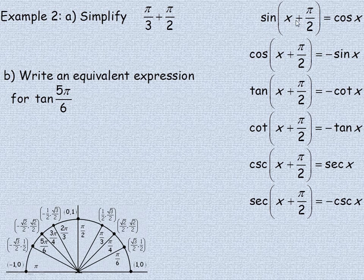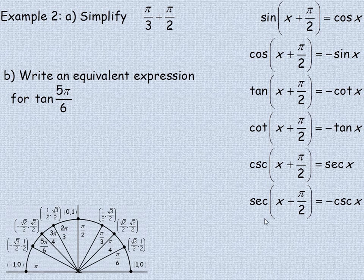For example, the sine of x plus pi over 2 is the same as the cosine of x. But the cosine of x plus pi over 2 is the negative sine of x — the magnitude is the same but opposite in sign. For tan and cotan, both have the negative relationship. For cosecant and secant — remember, cosecant is the reciprocal of sine and secant is the reciprocal of cosine — the cosecant of x plus pi over 2 is the secant of x, but the secant of x plus pi over 2 is the negative of the cosecant of x.